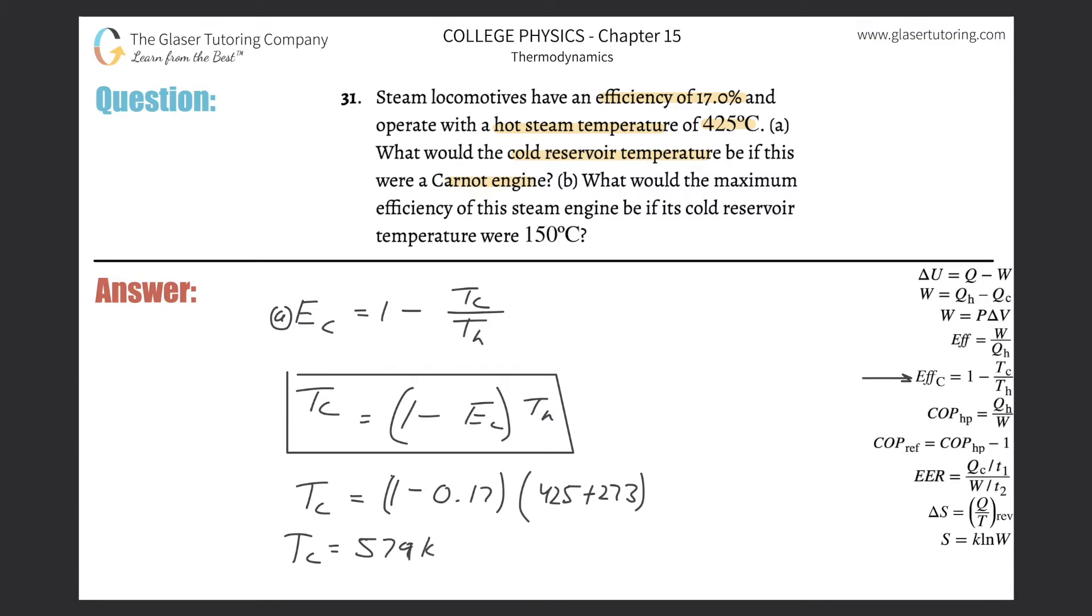If you need that in Celsius, subtract 273. And now that takes care of letter A. And how about letter B? What would the maximum efficiency of the steam engine be if its cold reservoir temperature were 150? So basically it's just asking us to do the same thing again, use the same formula. The efficiency of the Carnot is equal to 1 minus T sub C over T sub H.